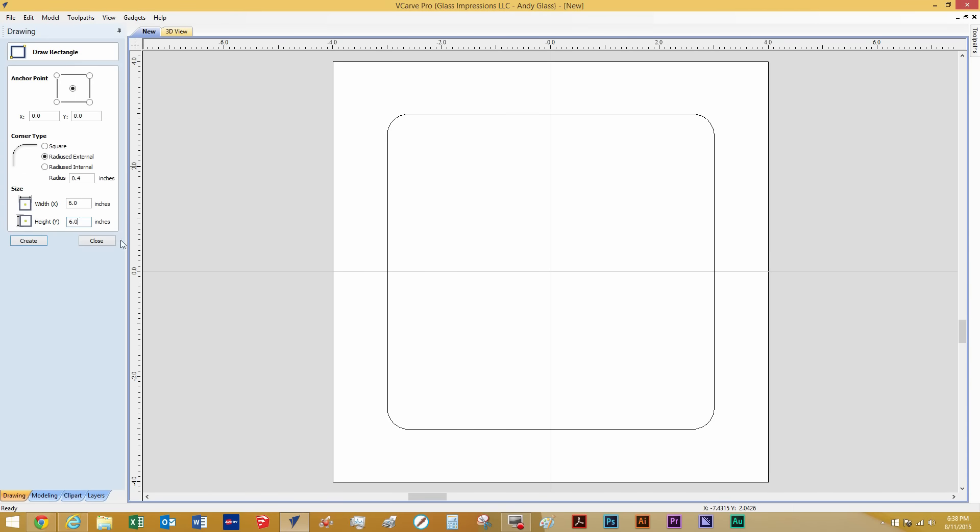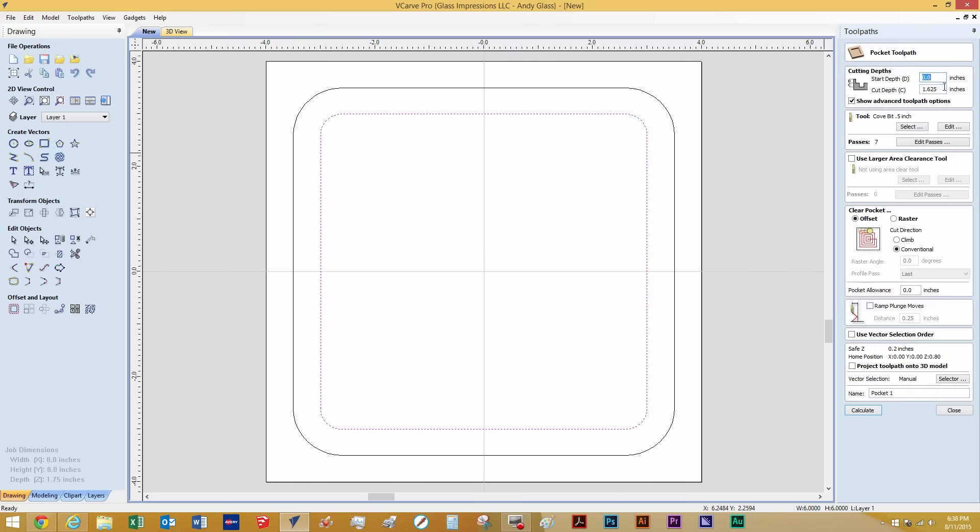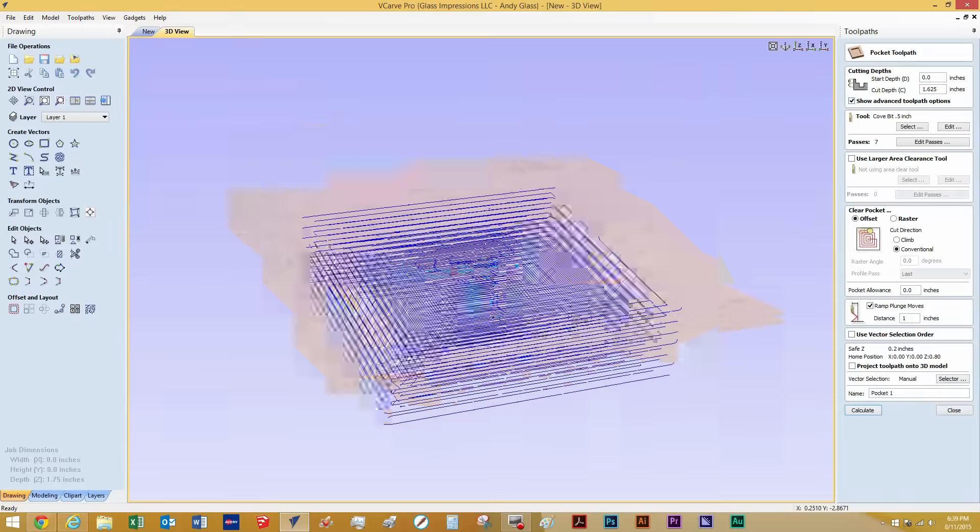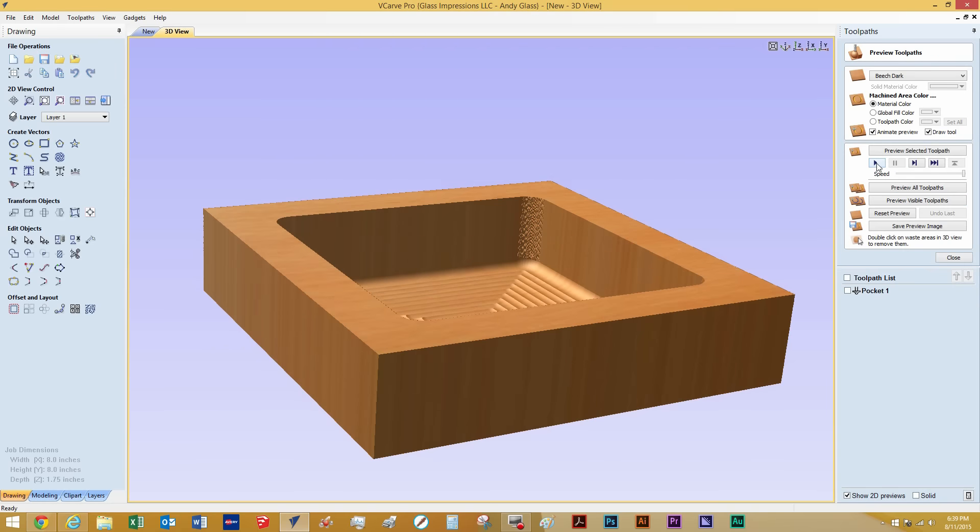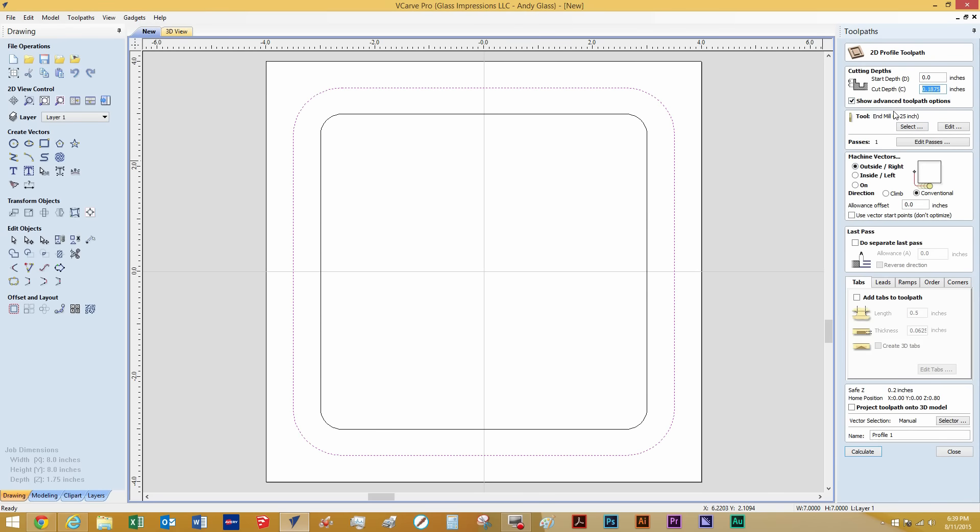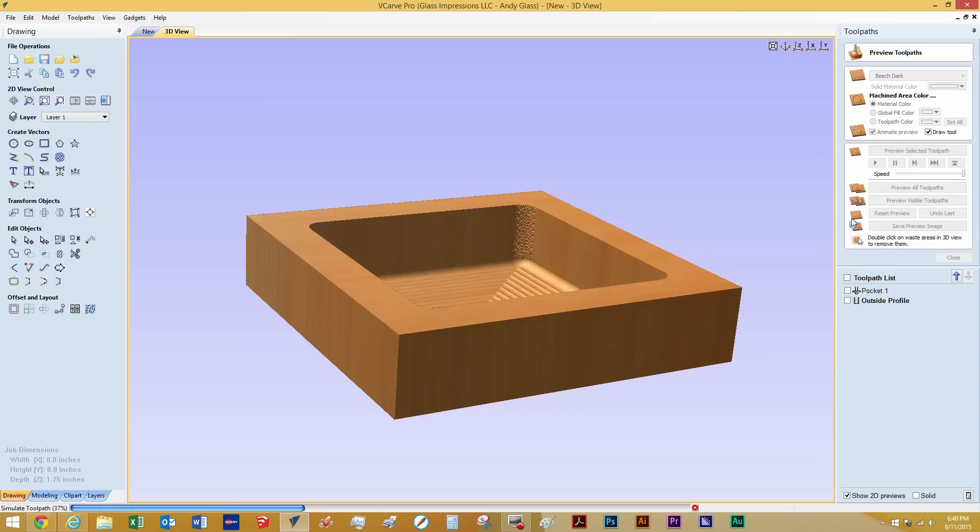I started out by designing the bowl in Vicar Pro. I drew a six inch by six inch square with a radius in the corners and then offset another line half an inch towards the outside. I set a pocketing profile on the inside square and an outside profile on the outside square.